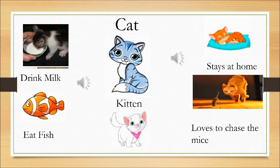And a baby cat is called a kitten. A baby cat is called a kitten. And the sound that it makes is meow. It mews.